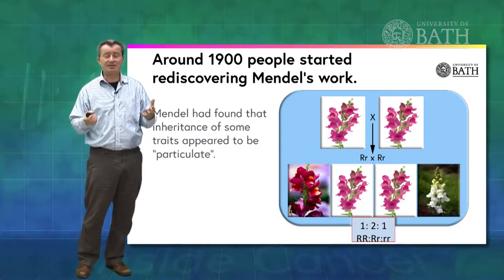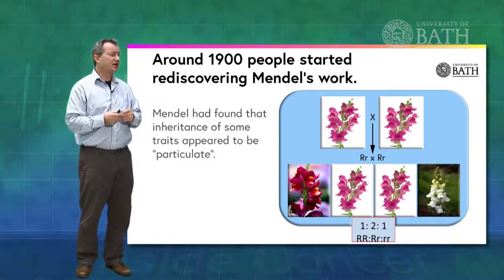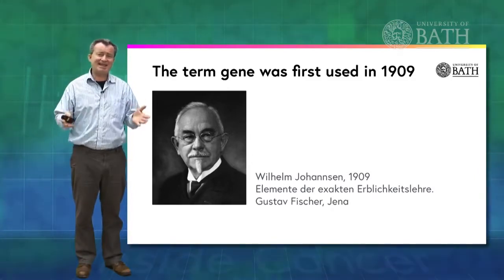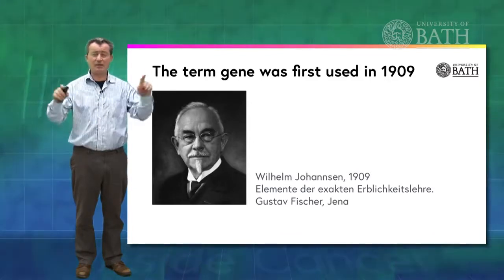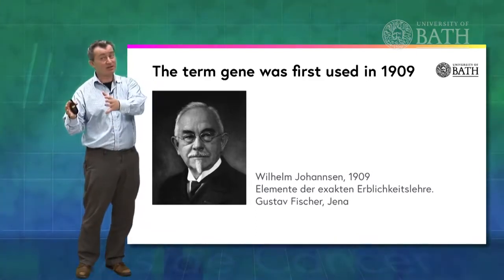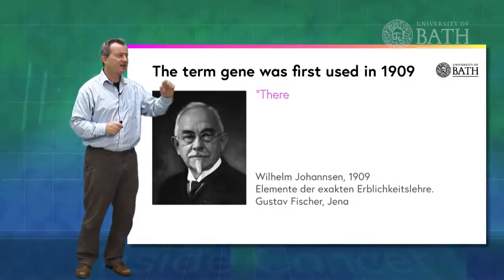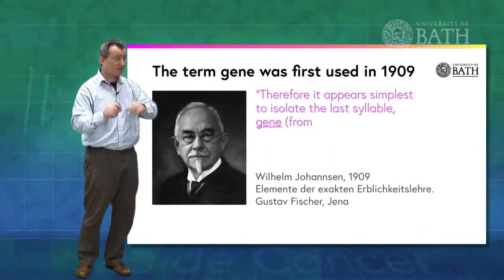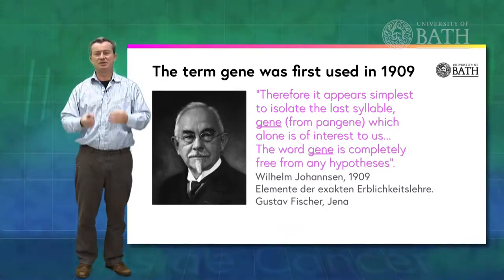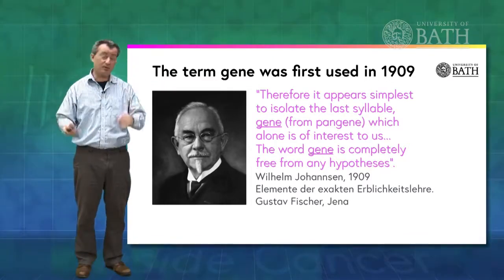So around 1900, we needed a name for what to call these things. And it was into this context that Wilhelm Johansson appeared, who in 1909 coined the term gene. He was taking an idea that had currency at the time — the idea of a pangene, a very particular hypothesis about how inheritance might work. What he said is: actually, I like the gene part of this. Gene from Genesis, from origins. So let's strip off the pan part and leave ourselves with the gene part. He stated: therefore, it appears simplest to isolate the last syllable, gene, which alone is of interest to us. The word gene is completely free from any hypothesis. It's a beautiful word because it relates to the Greek for origins, and it comes without any baggage. And the term stuck. So that's where we get the term gene from — it was to describe the underlying basis for those particles that are behaving in a Mendelian fashion.